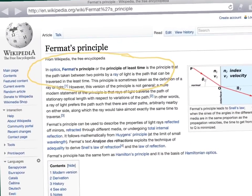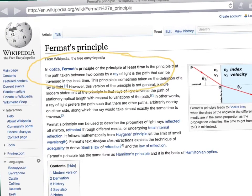So let's try and make that a bit clearer for you to read. Fermat's Principle, or the Principle of Least Time, is the principle that the path taken between two points by a ray of light is the path that can be traversed in the least time.